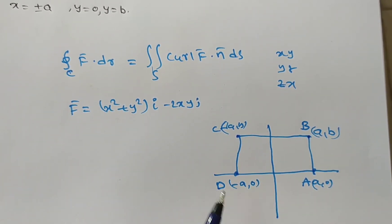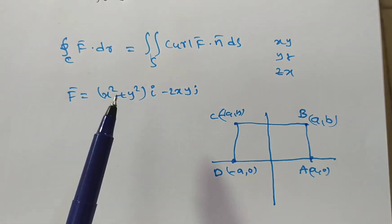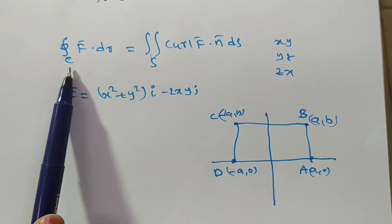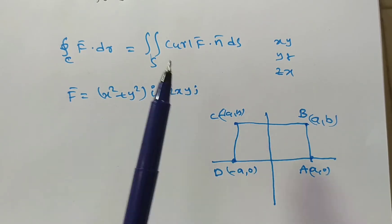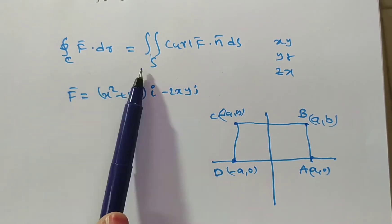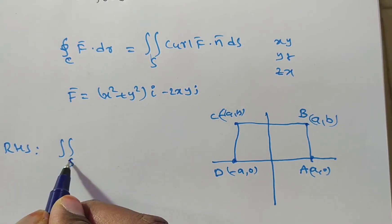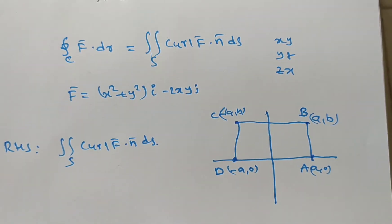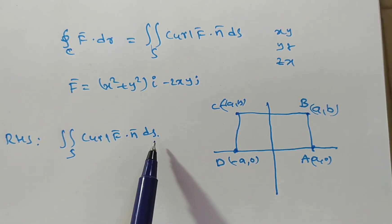We have to verify Stokes theorem around this rectangle. For verify, we need to prove LHS equals RHS. We start with the RHS part. For the RHS, we require curl f̄·n̄ dS. We know f̄, so we need to find curl f̄ and n̄. Also, dS depends on which plane we are in — xy, yz, or zx.